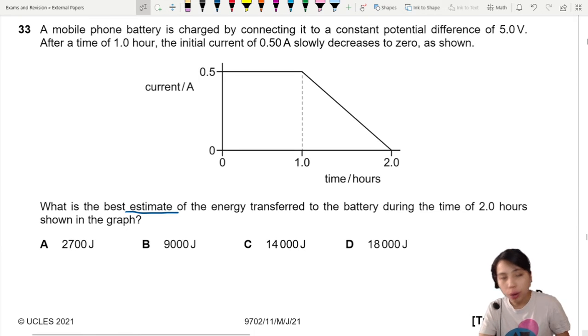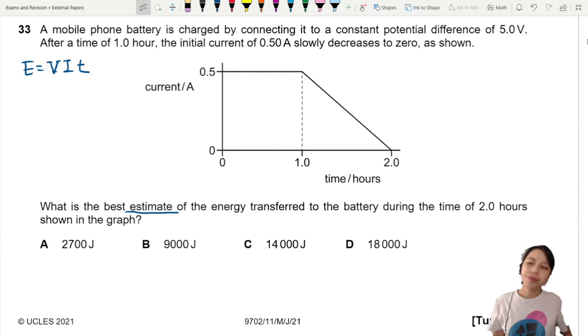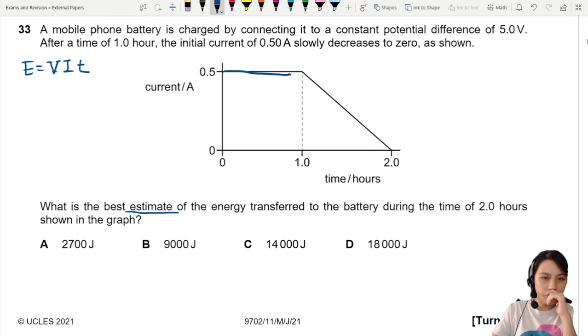If you want to find energy or electrical energy, what you can use is the general equation E equals V voltage, I and T. So we wouldn't have a problem in this part. I can just calculate VIT. Let's do VIT here.